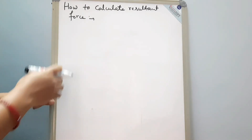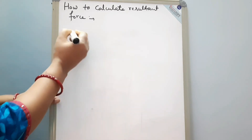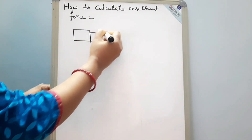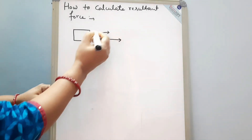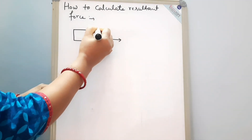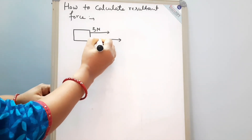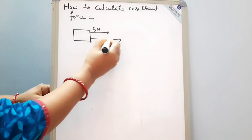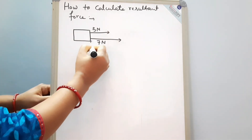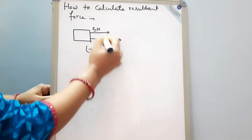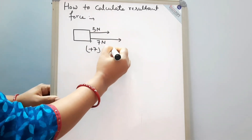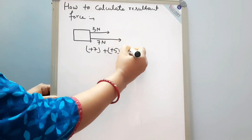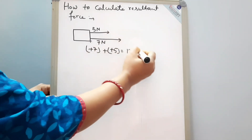Now we will see some more examples to calculate resultant force. Suppose this is a block and two forces are working in the same direction — 5 Newton and 7 Newton. Since both are on the same side, this will be plus 7 and plus 5. So our final resultant force will be 12 Newton towards east.